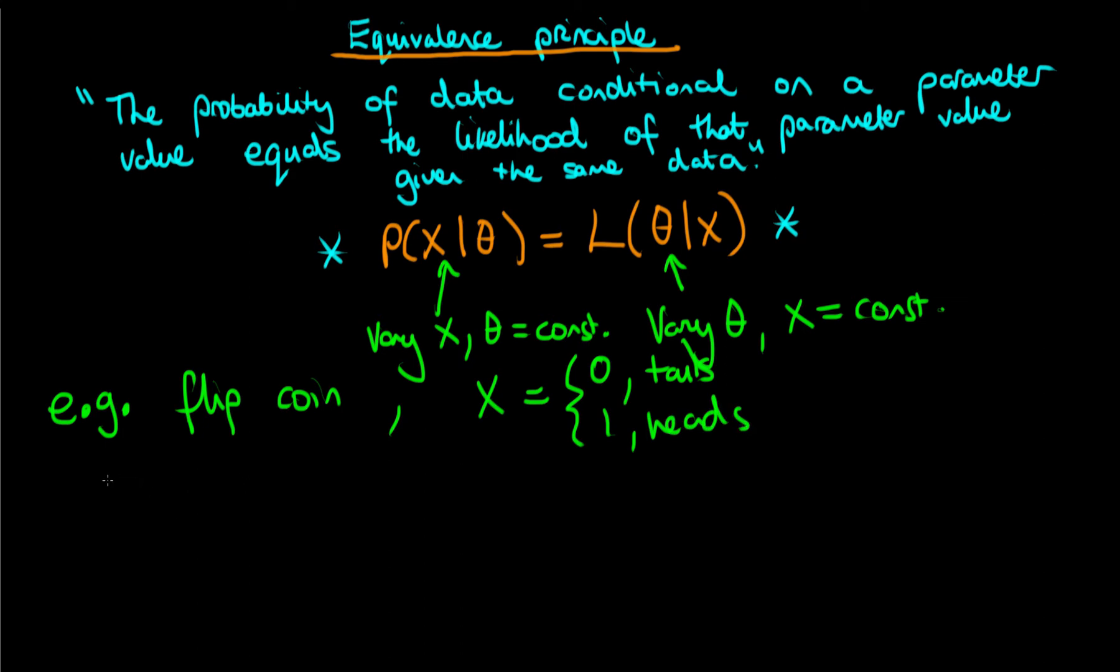So in this circumstance we can use a Bernoulli likelihood or probability distribution. You can use either interchangeably to describe the outcome of the situation. So we have the probability that x is equal to k given theta is equal to theta to the power of k times one minus theta to the power one minus k where k here is either zero or one.